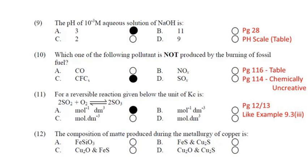Last question — question number 12: The composition of matte produced during metallurgy of copper is — یہ آسان ہے۔ Page 147 پہ smelting کے اندر roasted copper ore کے نیچے پورا equation given ہے — اور answer وہاں سے ملے گا۔